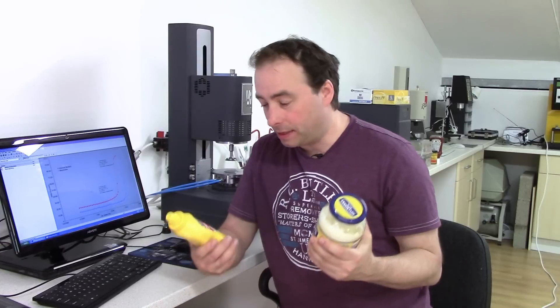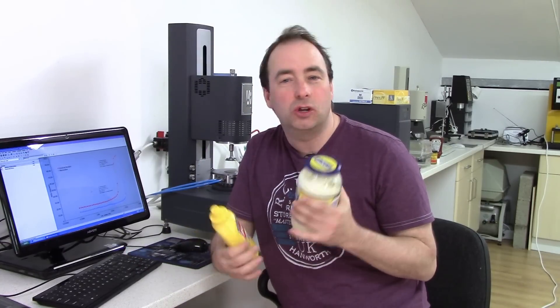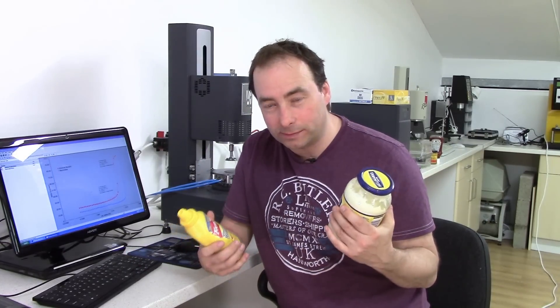In other words, you have to give the mayonnaise three times as hard a push to get it moving than the mustard. And that's going to show itself in how these materials look and feel to the consumer. Yield stress is one of the most underappreciated material properties that we can measure. More than viscosity, it contributes to texture, handling, appearance and a whole host of processing and performance behaviors.